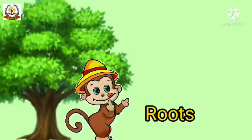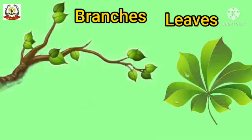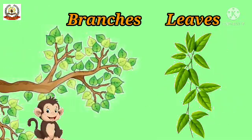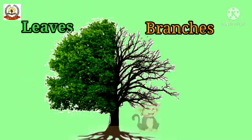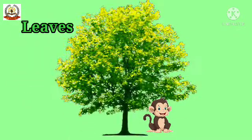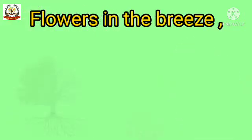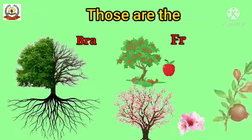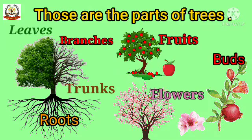Roots, trunks, branches leaves, branches leaves. Roots, trunks, branches leaves, branches leaves. Birds and fruits and flowers in the breeze. Those are the parts of trees.